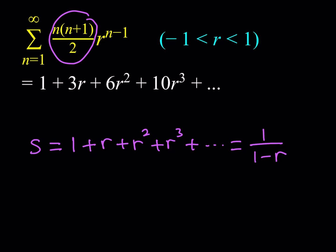For n equals 1, it gives you 1. For n equals 2, it gives you 3. But 3 can also be written as 1 plus 2 — that's what triangular numbers are. 6 can be written as 1 plus 2 plus 3, and 10 can be written as 1 plus 2 plus 3 plus 4. That's how our series works: every time we're adding another number, we're talking about sums of consecutive integers.